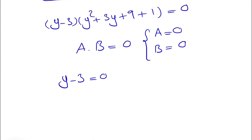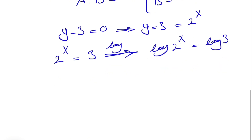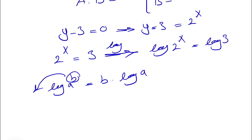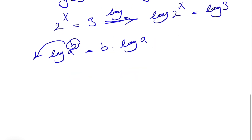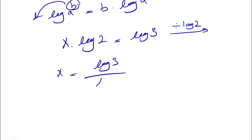From the first factor, y minus 3 equals 0, meaning y equals 3. Recall that y was 2 to the x, so 2 to the x equals 3. Since x is in the exponent, we apply logarithm to each side: log of 2 to the x equals log of 3. From the laws of logarithms, the exponent can come in front: x times log 2 equals log 3. Dividing both sides by log 2 gives x equals log 3 divided by log 2.